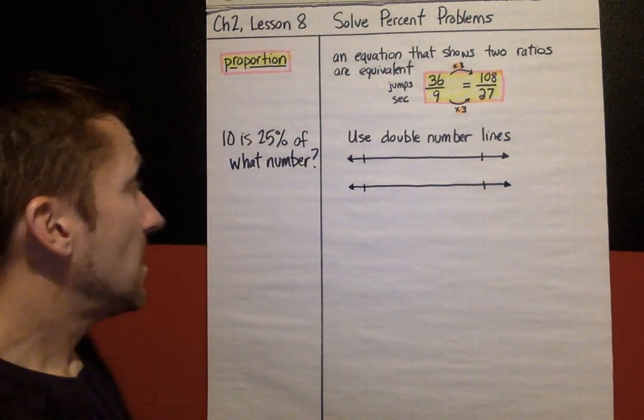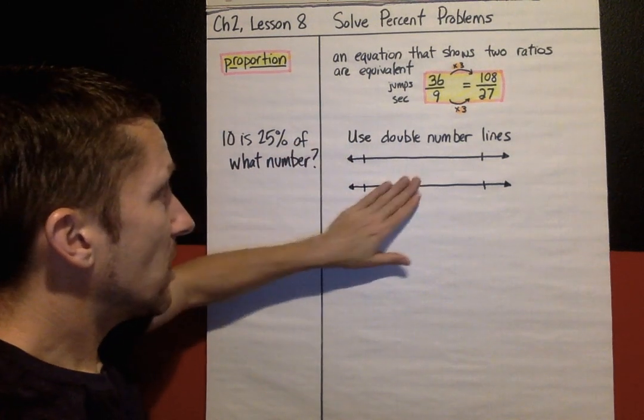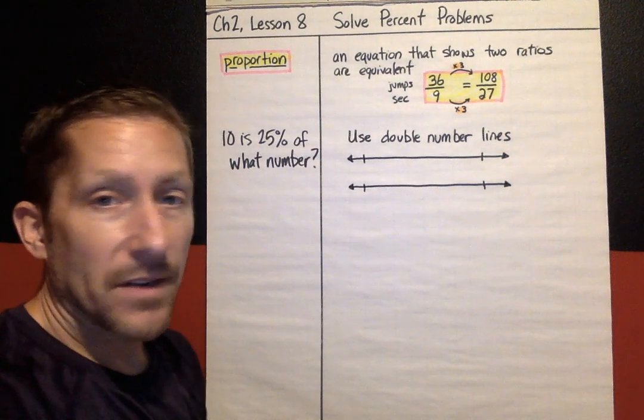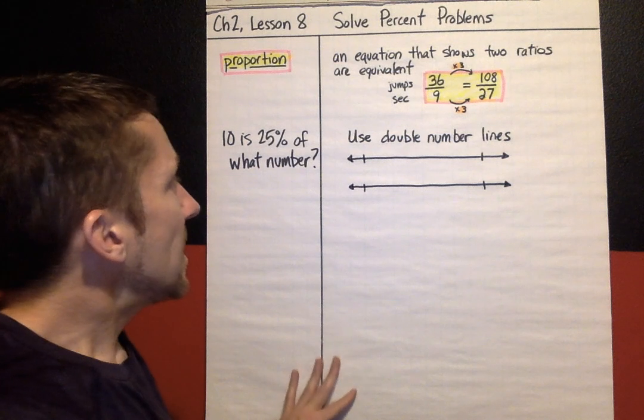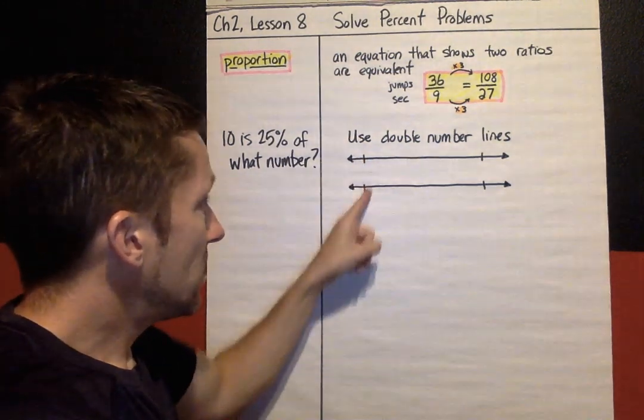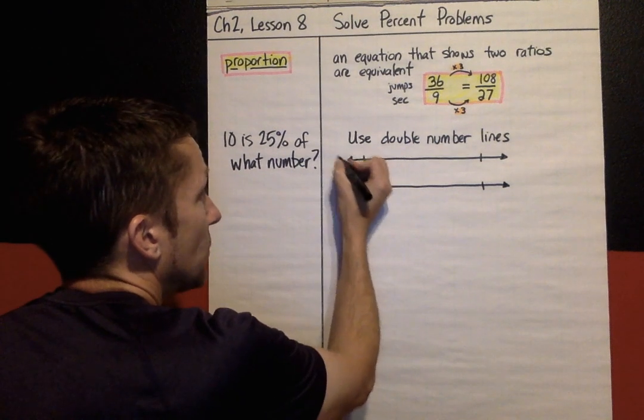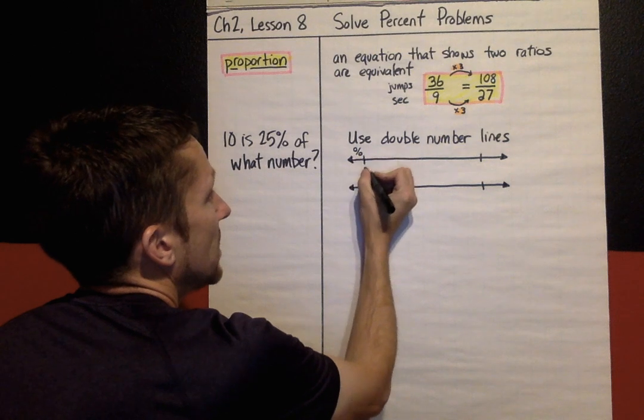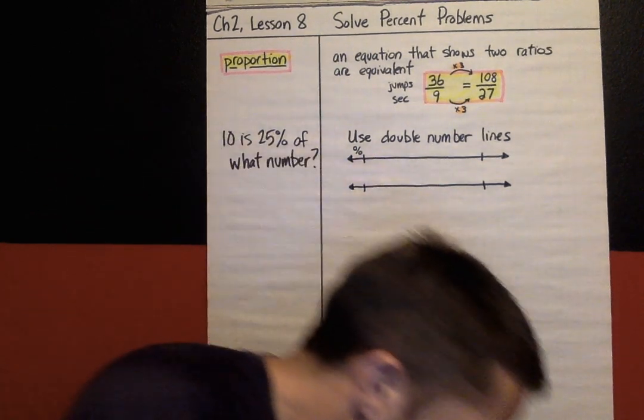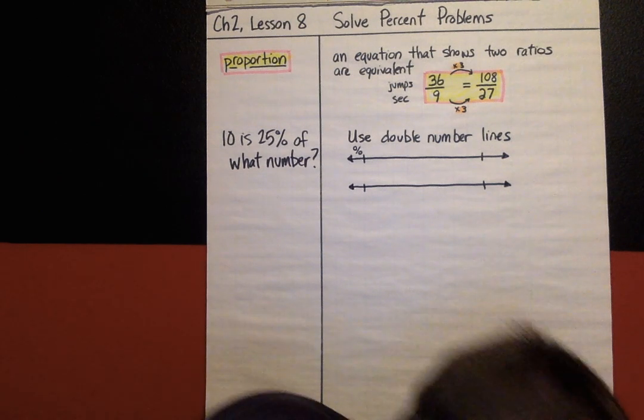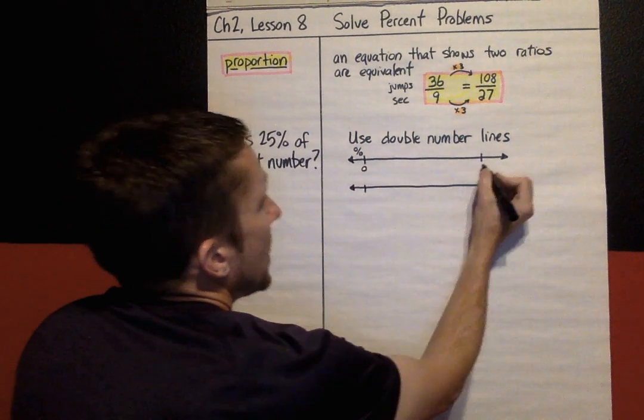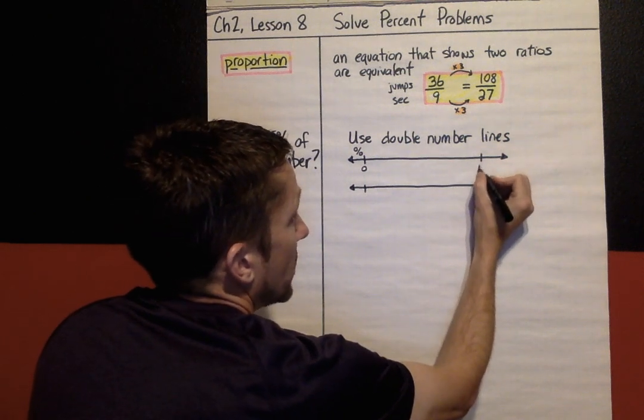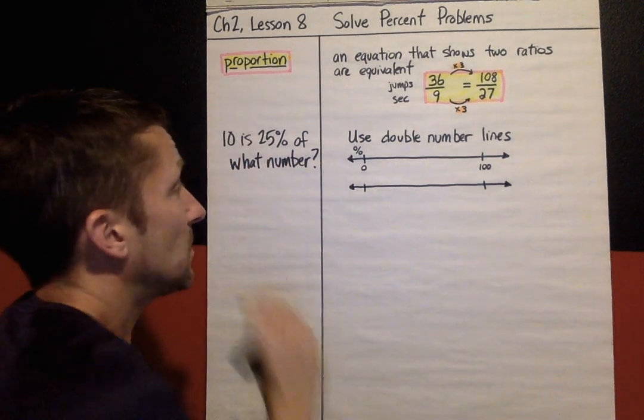And something like this. So you have two double number lines. And on one number line, you are going to identify percents. And on the other number line, you are going to identify numbers. I'm going to label percents on this number line. So this is percents. And this would be 0%. And a full number line or bar over here would be 100%.